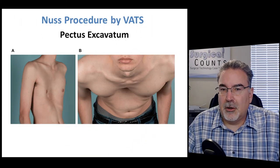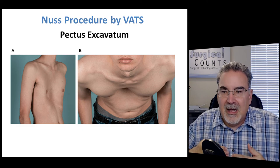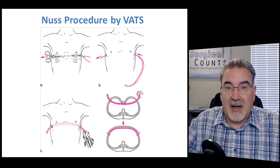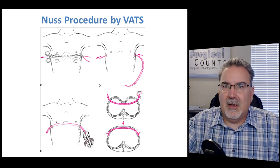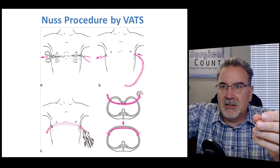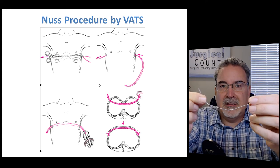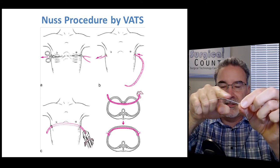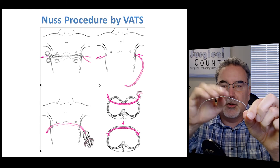VATS can also be used to repair pectus excavatum — a sunken chest where the sternum is pressed inward into the mediastinum area. To do this repair, we use VATS to find a clean path through from one side of the chest wall to the other, and insert a curved metal rod through this space — like this paper clip example. Once fed through, we rotate the rod so it pushes up against the sternum and lifts the chest wall upward, then fix both ends into the chest wall. This bar holds the chest wall open. This Nuss procedure is usually most effective on children five years or younger.